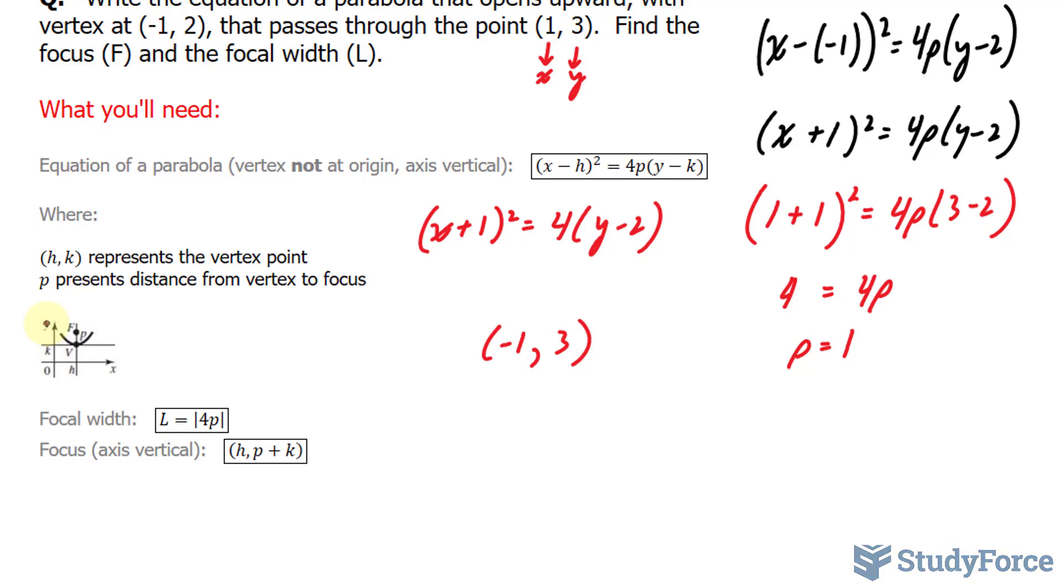Lastly, we need to find the focal width, and that's represented by the letter L. That's four times your p value. So the focal width L is 4p, giving us four. The focal length is the distance from this point to this point.